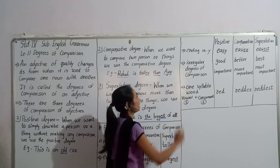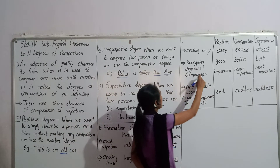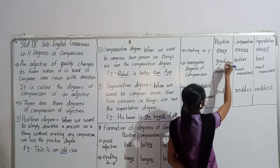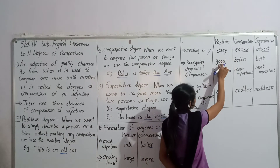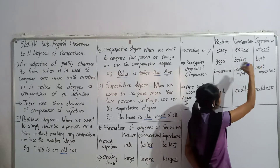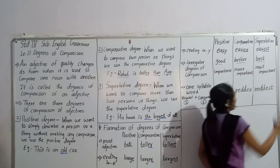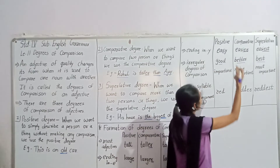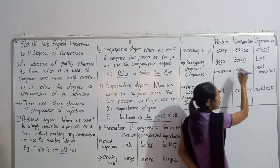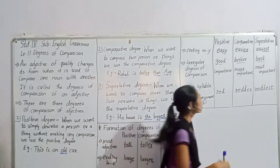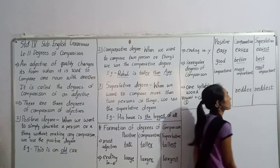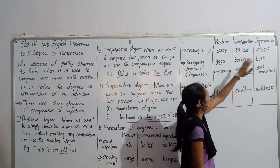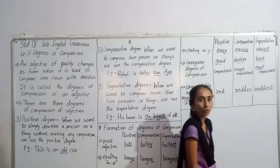Now next: irregular degrees of comparison. Kuch jo forms hoti hain wo irregular hoti hain, jaise ki the word 'good' — positive degree hai 'good', comparative degree hai 'better', and superlative degree hai 'best'. Usi tarah se, kuch words mein comparative degree mein 'more' add hoga, aur superlative degree mein 'most' add hoga — jaise 'important', 'more important', 'most important'.